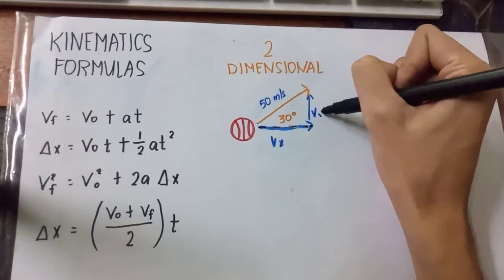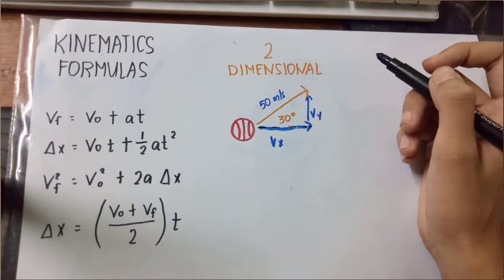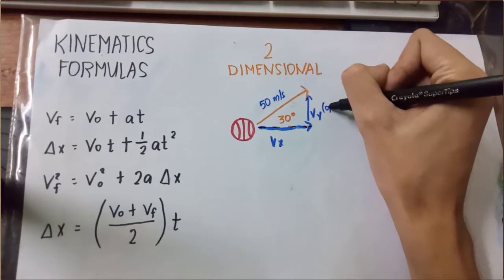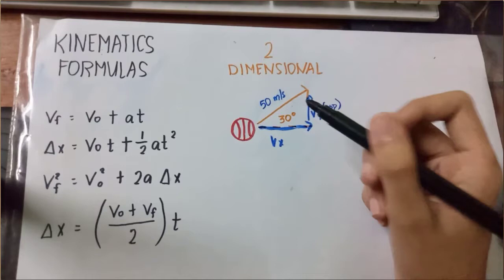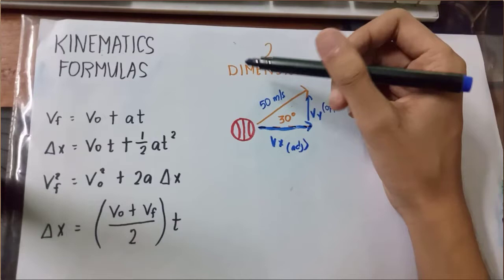Para ma-solve ang ating vertical velocity and the horizontal velocity. At alam naman natin na ang vertical velocity y is the opposite side of the 30 degrees. So, ilalagay natin dito ay opposite. At alam naman natin na sa horizontal side is the adjacent side of 30 degrees. Ilalagay natin ang adjacent. At ang 50 meter per second is the hypotenuse of the right triangle.